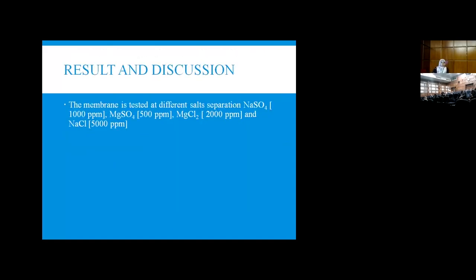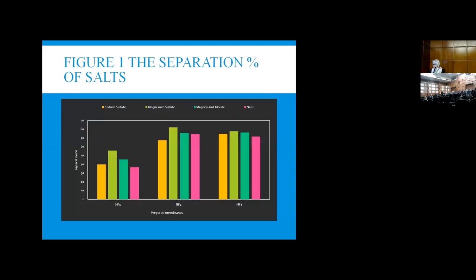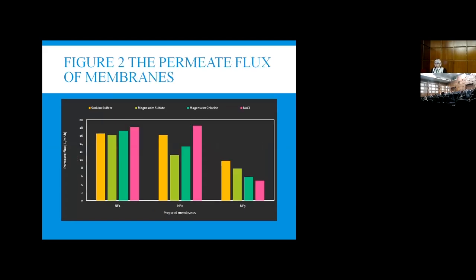Testing is done with many different types of mineral salts: sodium chloride, sodium sulfate, and magnesium sulfate, with different percent concentrations. Figure one shows the separation percent. Figure two shows the permeate flux for the three types of membrane.